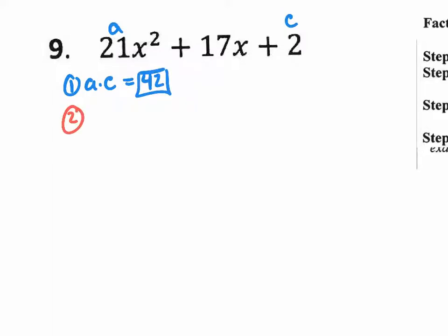Step two, make a list of the multiples of 42 and see which one combines together to give you 17, the B value. So how can I get 42? 1 times 42, 2 times 21.